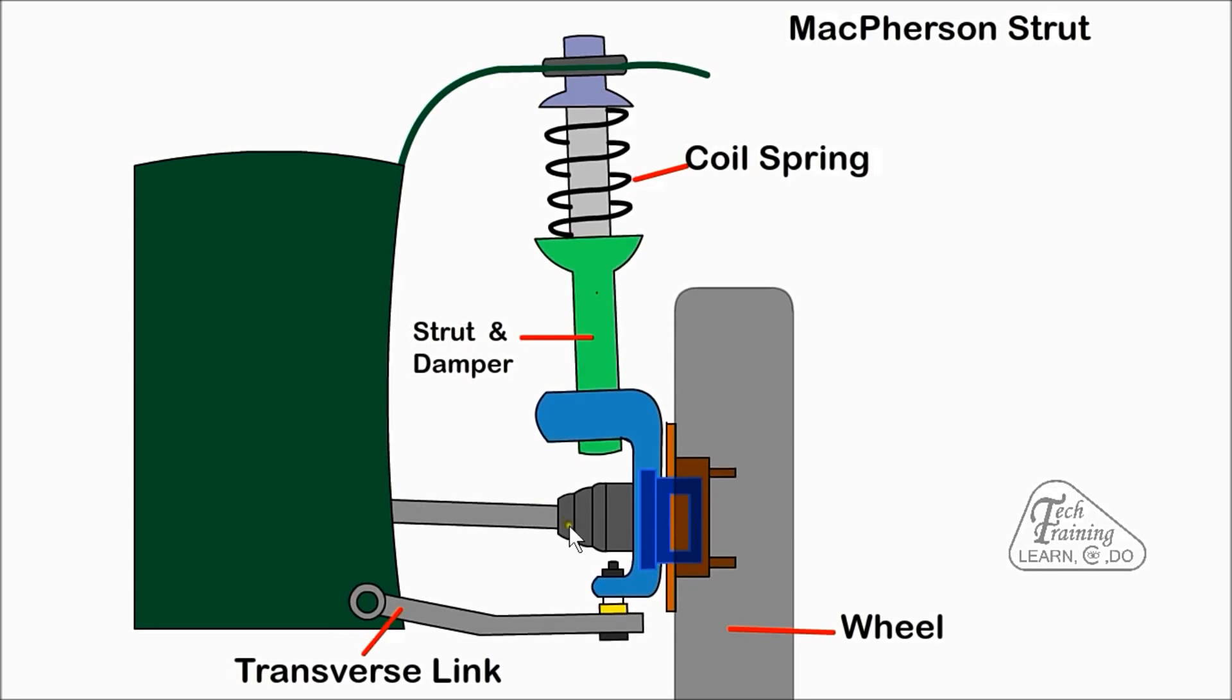A CV joint or constant velocity joint allows connection from the drive shaft to the wheel. It allows movement in all directions and is covered by a rubber boot to prevent ingress of dirt.